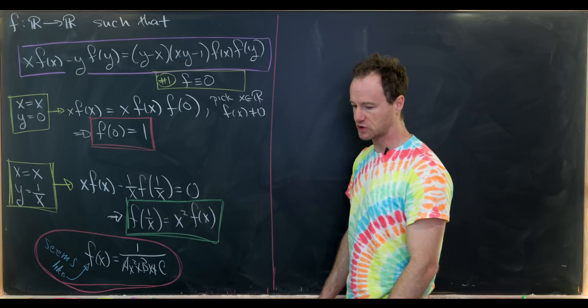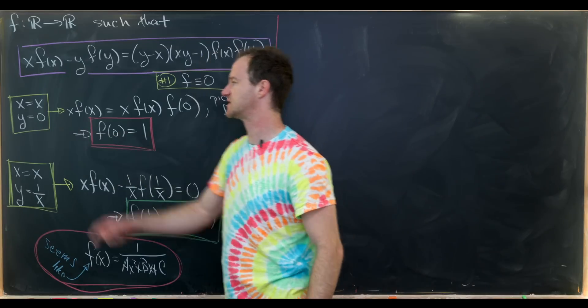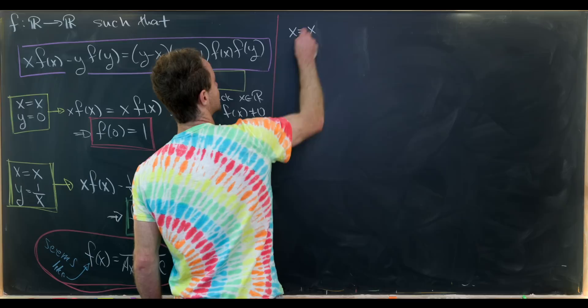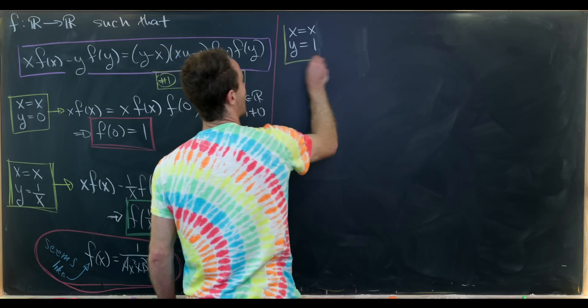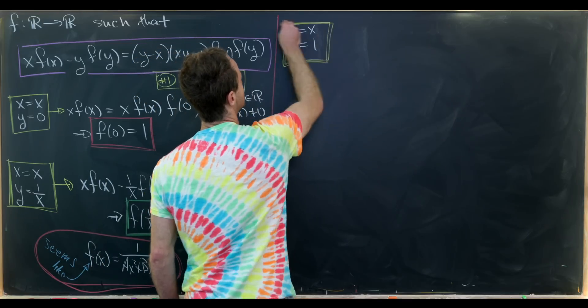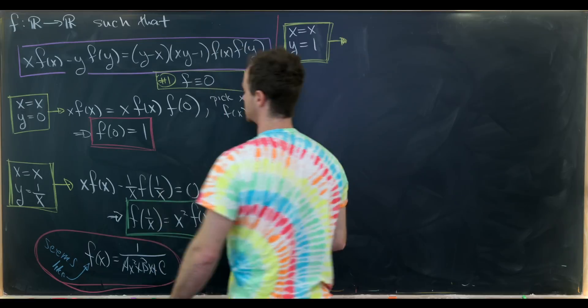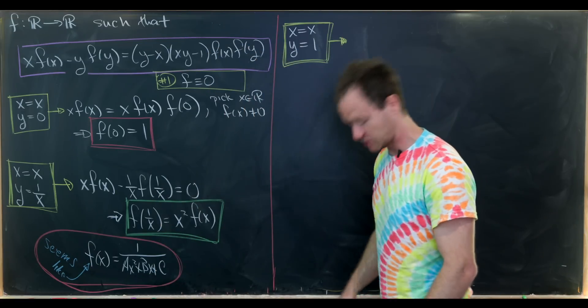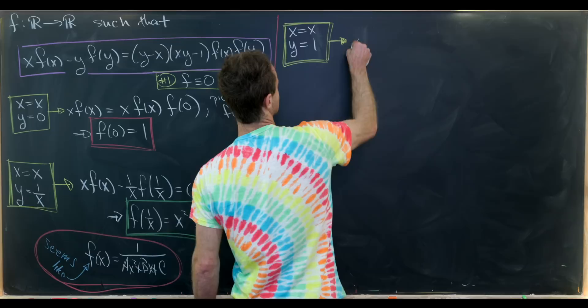Maybe we can get a better restriction. So let's in fact work towards a better restriction, and we'll do that by doing something similar to this first substitution. Let's take x equal to x and y equal to 1. Why am I picking 1? Well the two simple things to plug into these types of functional equations are 0 and 1.